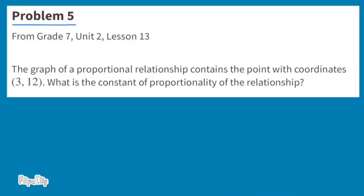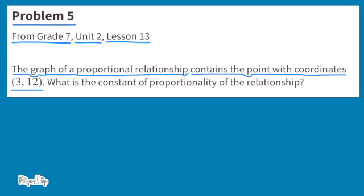Problem number five. From seventh grade, unit two, lesson 13. The graph of a proportional relationship contains the point with coordinates 3 and 12. What is the constant of proportionality of the relationship?